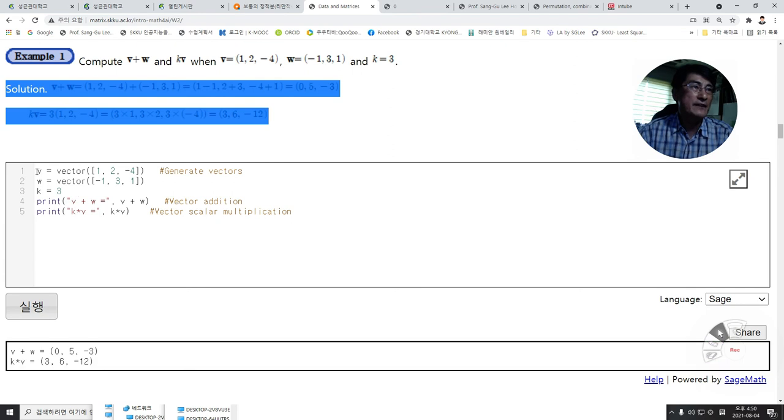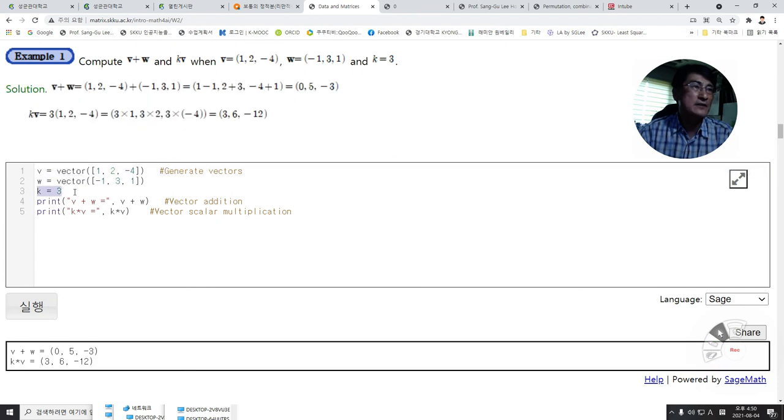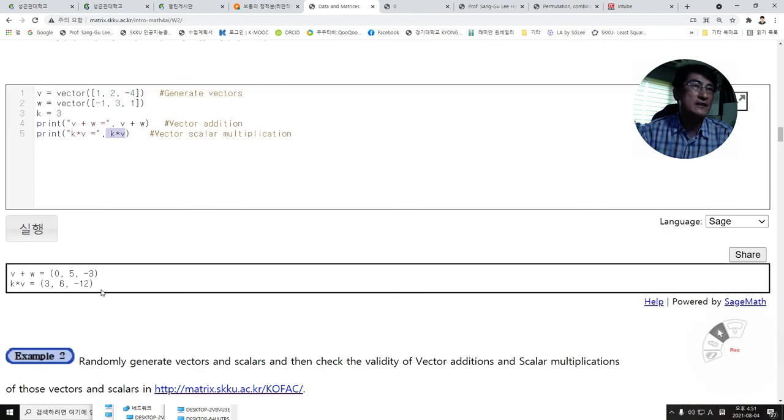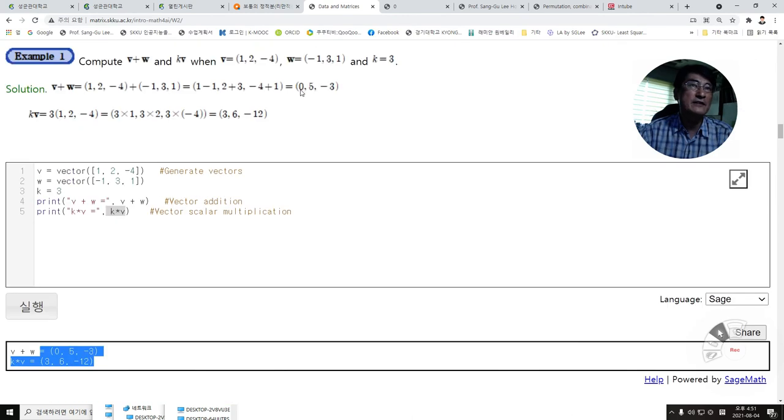Define the vectors V and W and scalar k equals 3. Then print V plus W and print k times V, which gives us the same solution as we had before. If we change these vectors or scalar, we will have the result for those given vectors.